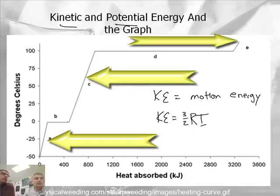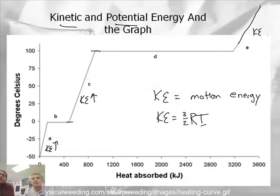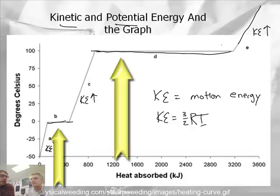So in part C here, kinetic energy is going up right here. And that would be true in A, section A. And also true in section E. And so we would say kinetic energy is going up. But in sections B and D, we are not changing the kinetic energy, but there is more energy. We're putting energy in, so we're actually increasing the amount of potential energy. So the potential energy goes up in section D and also in section B.